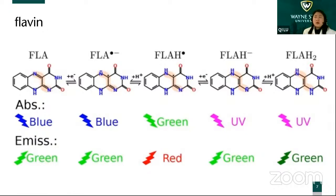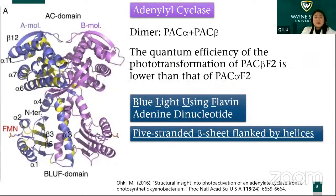So it absorbs some photons and also emits another wavelength of light. The structure presented by our group in 2016 shows that it is formed by a dimer — called PAC alpha and PAC beta. The length is slightly different between alpha and beta subunits, and the quantum efficiency of photo-transformation is lower for beta than alpha.